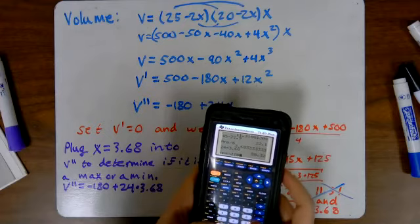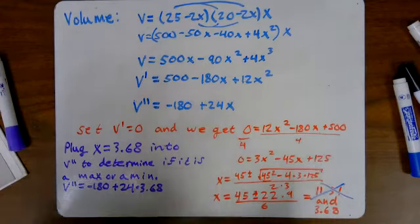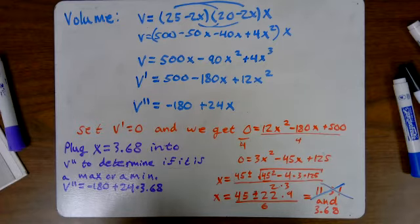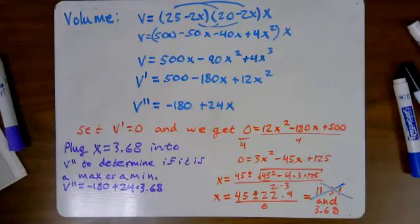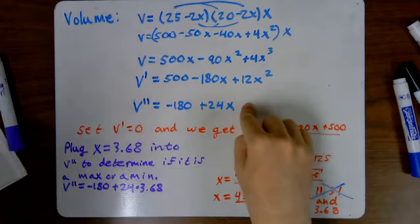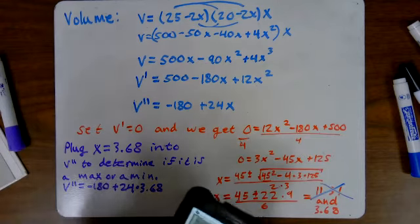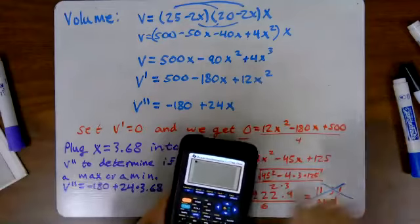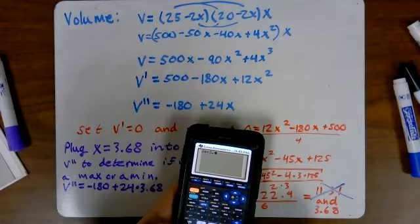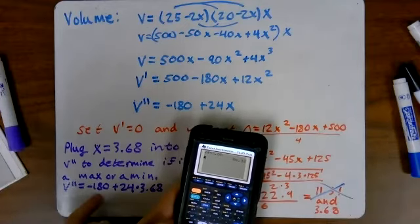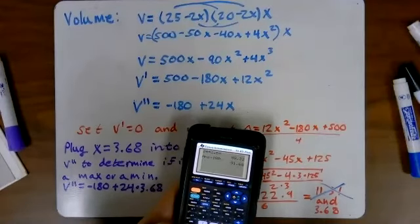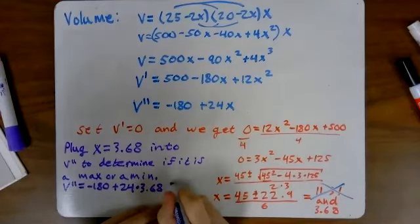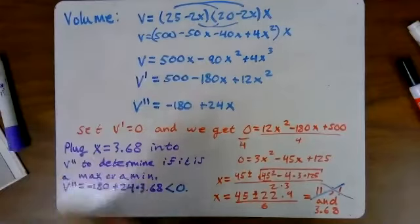24 times 3.68 is 88.32. Plus this negative 180, that gave me negative 91.68. So this is less than 0. Since it's less than 0 we're concave down which means we have a maximum.